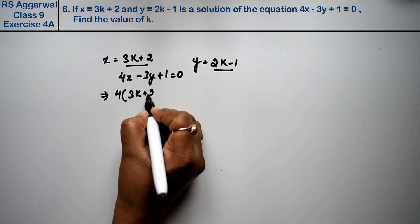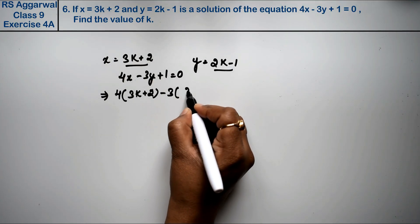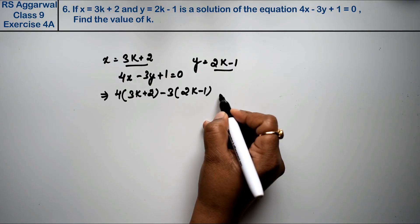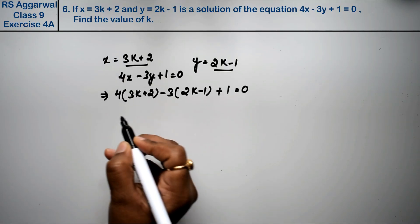We get 4 times 3k plus 2 minus 3 times 2k minus 1 plus 1 equals 0. Now we open the brackets.